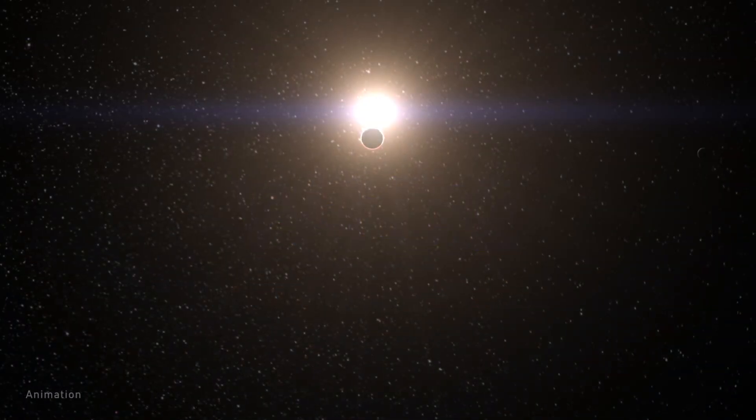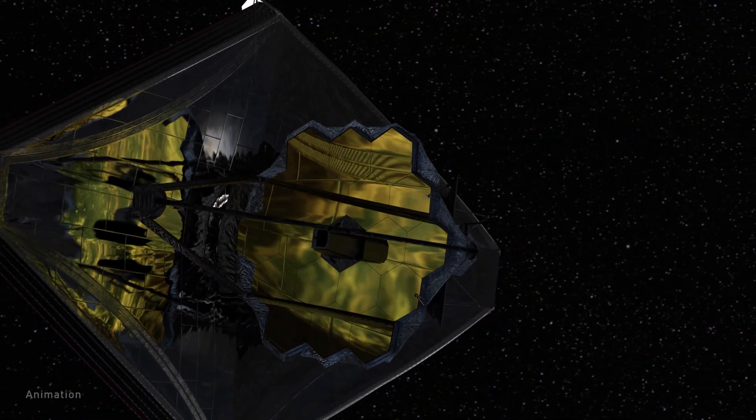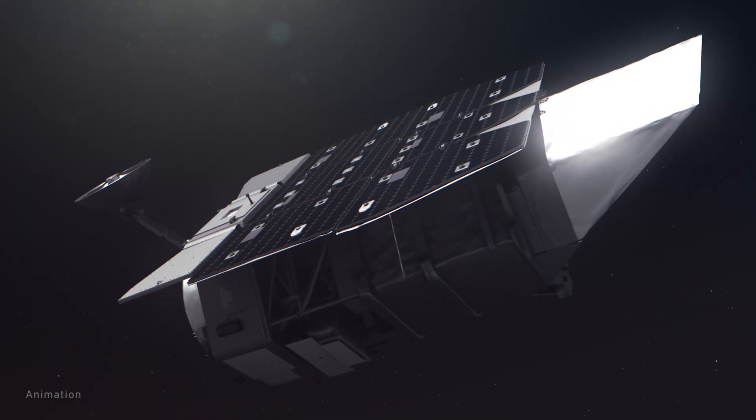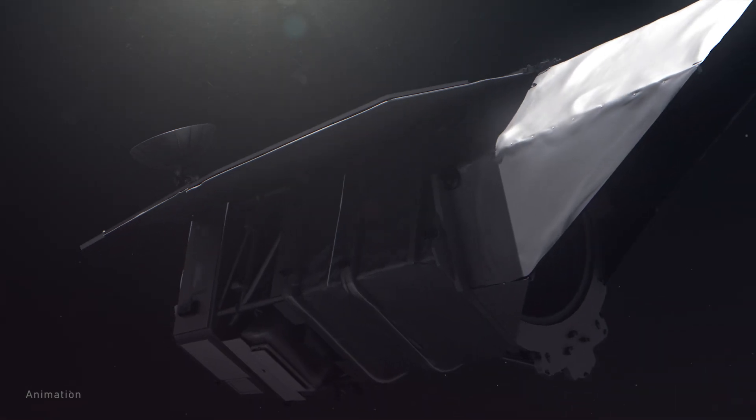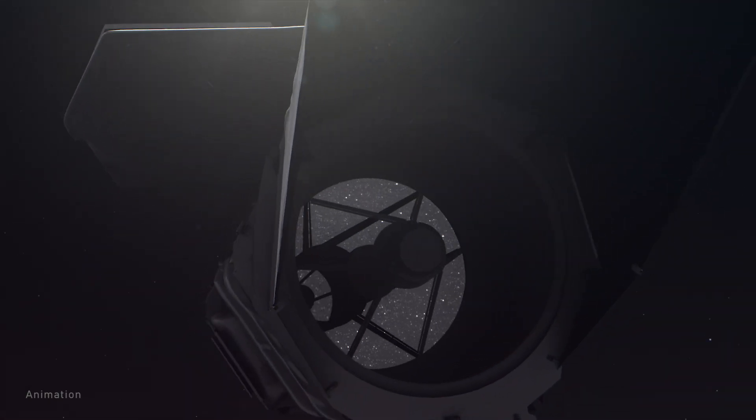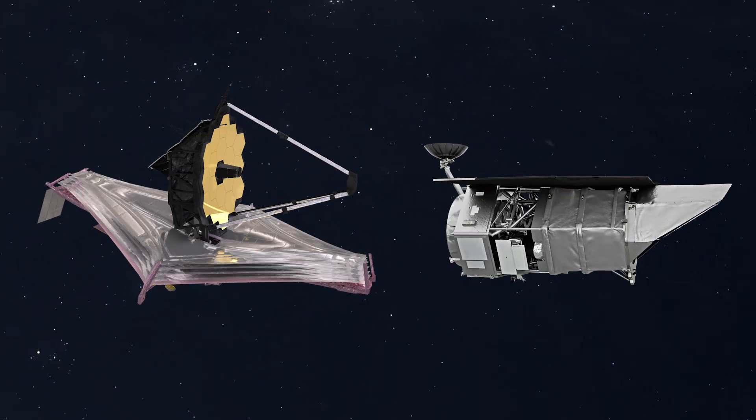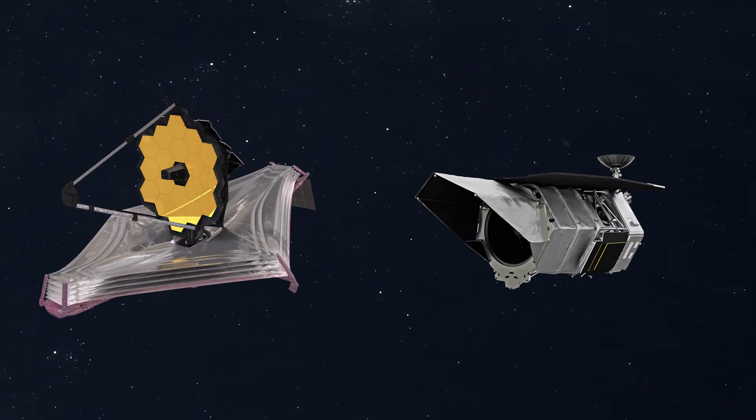The James Webb Space Telescope is now a million miles from Earth and performing science operations. The Nancy Grace Roman Space Telescope is scheduled to launch by 2027. These two observatories are NASA's latest flagship missions in the tradition of Hubble, Chandra, and Spitzer.